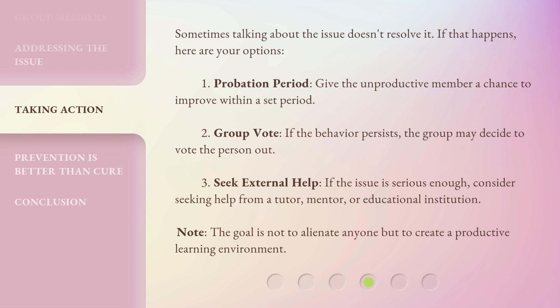Sometimes talking about the issue doesn't resolve it. If that happens, here are your options: 1. Probation period — give the unproductive member a chance to improve within a set period. 2. Group vote — if the behavior persists, the group may decide to vote the person out. 3. Seek external help — if the issue is serious enough, consider seeking help from a tutor, mentor, or educational institution. Note: the goal is not to alienate anyone, but to create a productive learning environment.